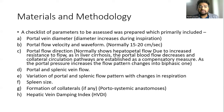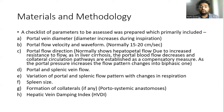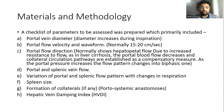A checklist of parameters to be assessed for all patients in this study was prepared beforehand and primarily included: portal vein diameter, which normally increases during inspiration; portal flow velocity and waveform, normally around 15 to 20 centimeters per second; portal flow direction, which normally shows hepatopetal flow — but due to increased resistance as in liver cirrhosis, portal blood flow decreases and collateral circulation pathways are established, leading to a biphasic to-and-fro flow pattern; portal and splenic vein flow variation with respiration; formation of collaterals, i.e., portosystemic anastomoses; and hepatic vein damping index.